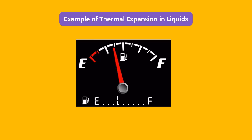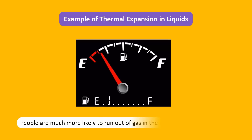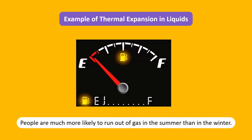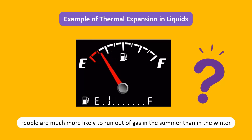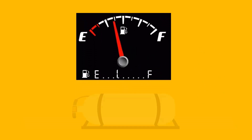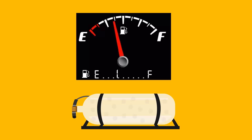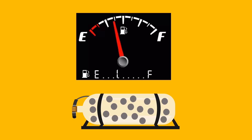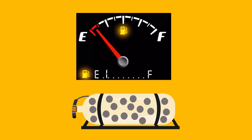For example, consider the gas gauge on a car. People are much more likely to run out of gas in the summer than in the winter. Why is that? Well, the gas in your car expands just like everything else, and it changes the reading on your fuel gauge.